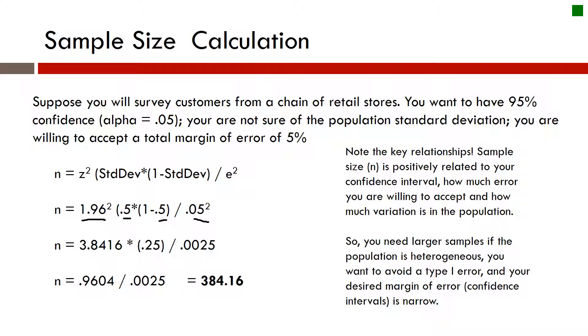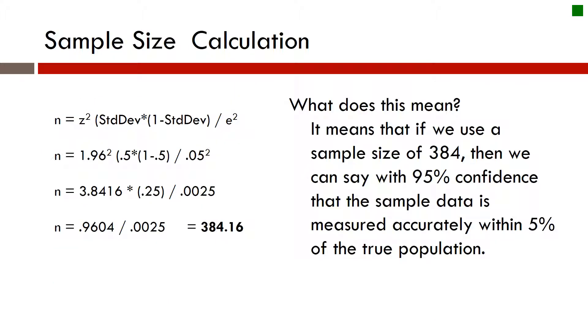So you need a larger sample. Again, if there's a big standard deviation, if you want to avoid the type 1 error, which would be the Z impact there, and our desire for error is fairly low.